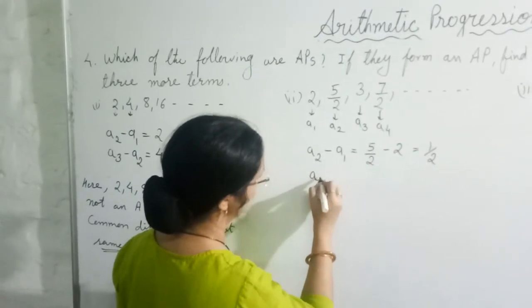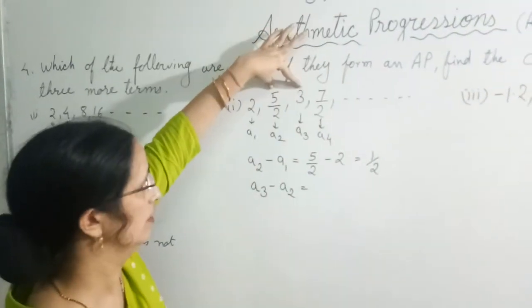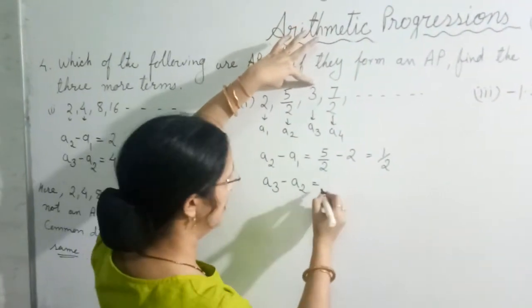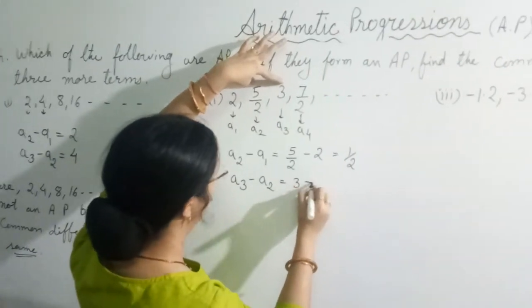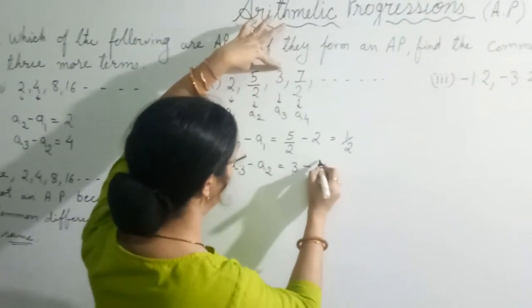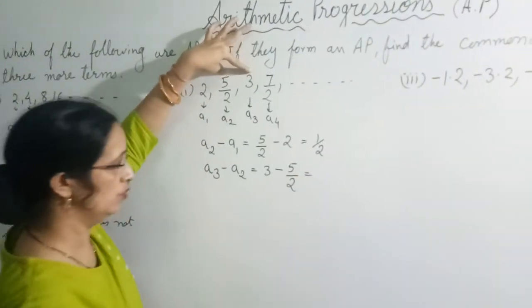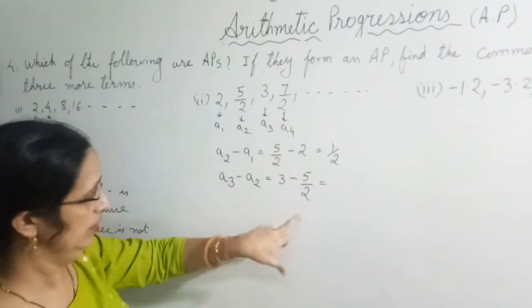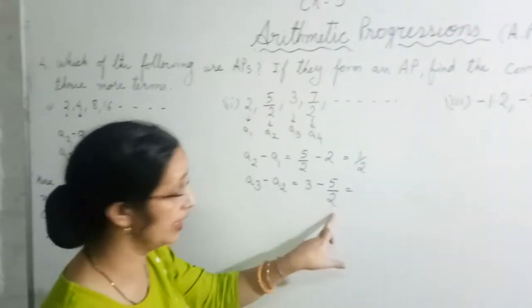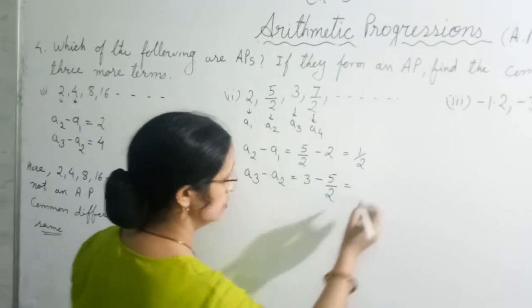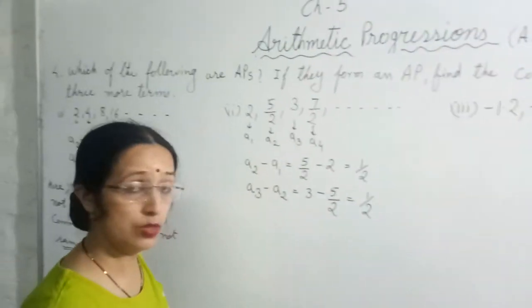Second, it will be A3 minus A2. A3 is 3. So A3 minus A2, A3 is 3 minus A2 means 5 by 2. Again we take LCM. Those who cannot do orally, do it in rough column. 3 ke niche 1 suppose. Take LCM. So your answer will come 1 upon 2.